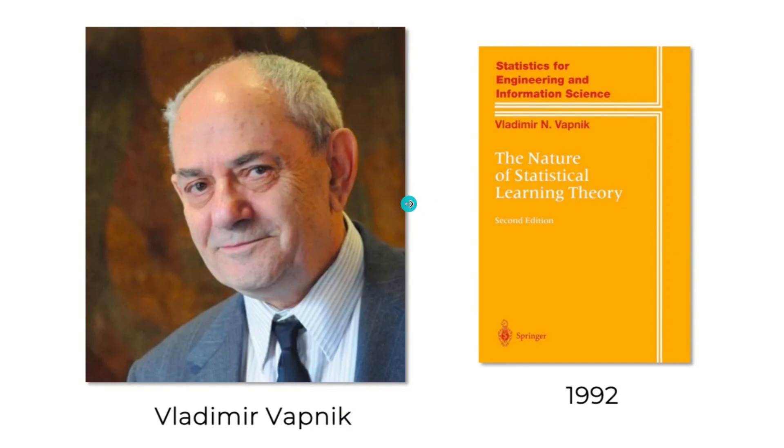Support vector regression was invented way back in the 90s by Vladimir Vapnik and his colleagues who were working at AT&T Bell Labs. A lot of support vector machine and support vector regression are discussed in Vladimir Vapnik's book, The Nature of Statistical Learning, 1992. This is a little history about how it got evolved.